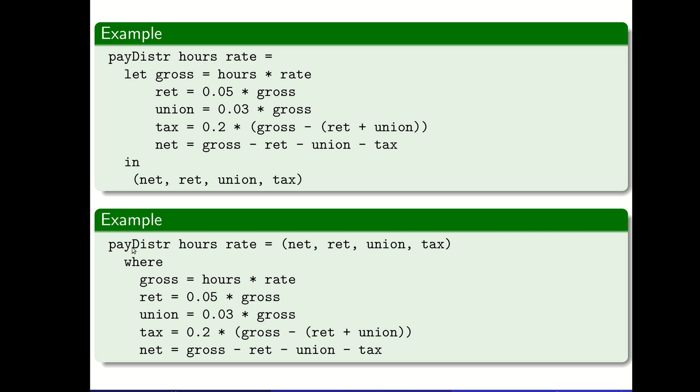The where statement states that the pay distribution takes hours and rate and gives us net, retirement, union, and tax. This tuple, same one as above. Then it goes to define those different things: the gross, the retirement, the union, the tax, and the net. These two are pretty much equivalent. It's just a choice of whether you're making the statement of what the function does and then defining those local variables, or you define those local things up front and then make the statement of what the function will return.